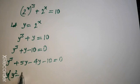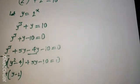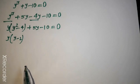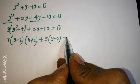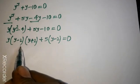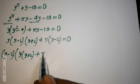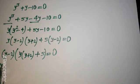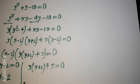We factorize: y squared minus 4 here, and 5y minus 10, giving y minus 2 as a factor. Taking y minus 2 common: y minus 2 times y squared plus 2y plus 5 equal to 0. So either y minus 2 equal to 0, giving y equal to 2, or y squared plus 2y plus 5 equal to 0.